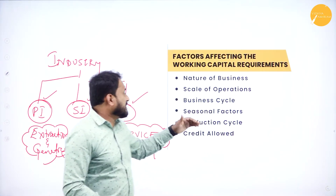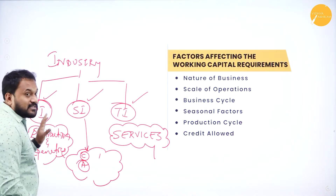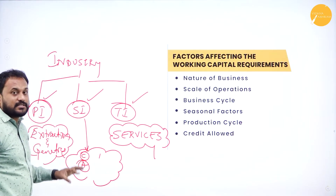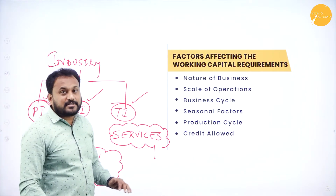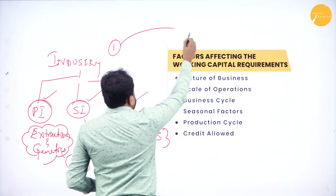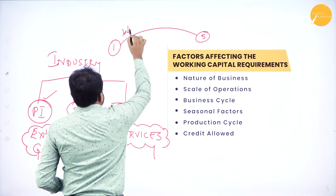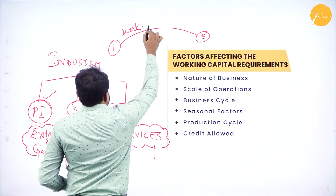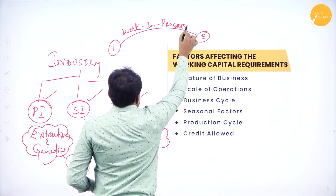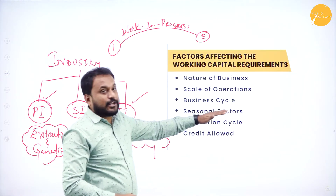Next is business cycle. When I talk about primary industry — extraction, genetic — or secondary industry — construction, analytical — or tertiary industry, from the first point to the last point, money is required. We call that work in progress. So this is the current asset — work in progress — and it is required throughout the business cycle.